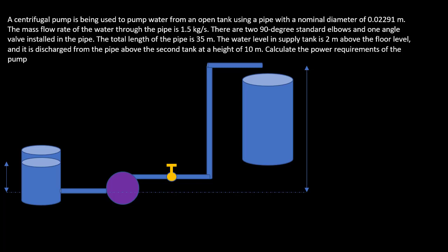In terms of the problem statement, we have a centrifugal pump being used to pump water from an open tank using a pipe with a nominal diameter of 0.02291 meters and a mass flow rate of 1.5 kilograms per second. There are two 90-degree standard elbows and one angle valve installed in the pipe. The total pipe length is 35 meters. The water level in the supply tank is 2 meters above the floor level and is discharged above the second tank at a height of 10 meters. We are to calculate the power requirement of the pump.